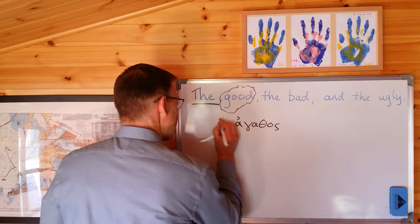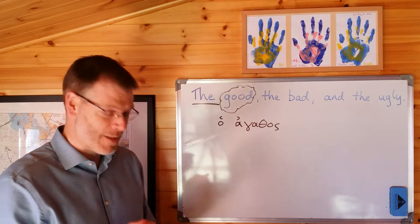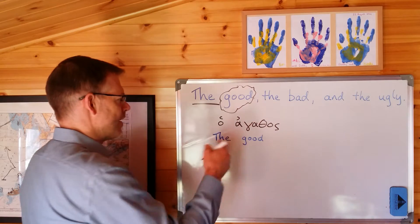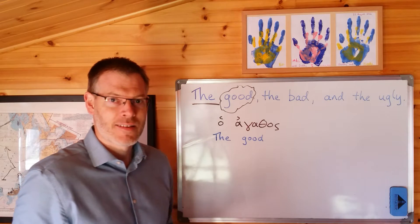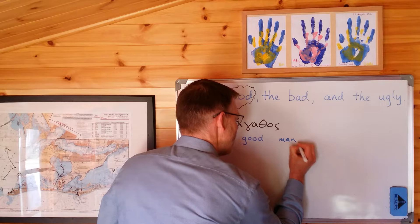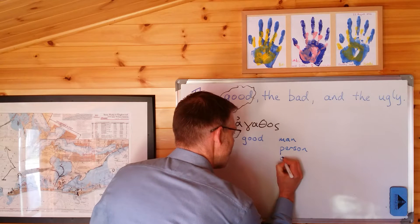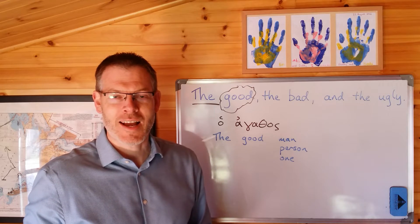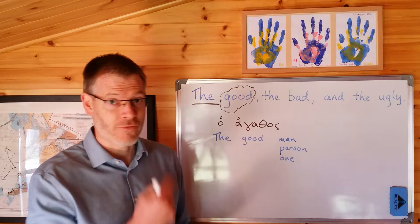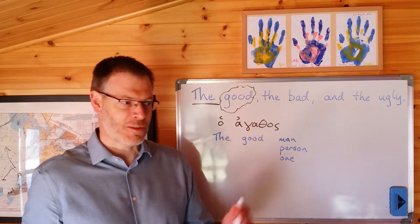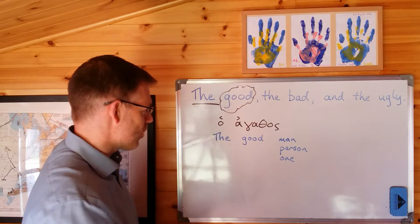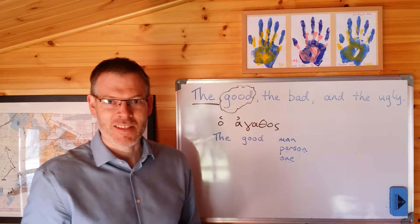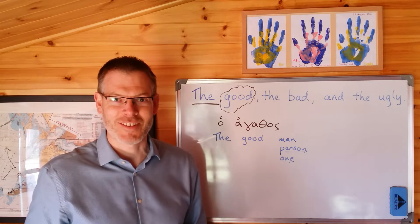Ho agathos — actually, it doesn't mean 'the good things'; we'll come to that in a second. Ho agathos means literally 'the good.' In this case, because it's masculine and singular, it means 'the good man' or 'the good person' or conceivably 'the good one.' It's masculine, and so it refers to a man, or — as you've gotten used to in ancient Greek and other ancient languages — until quite recently, the masculine gender was used generally to refer not just specifically to men, but to men and women broadly, especially in a plural group.